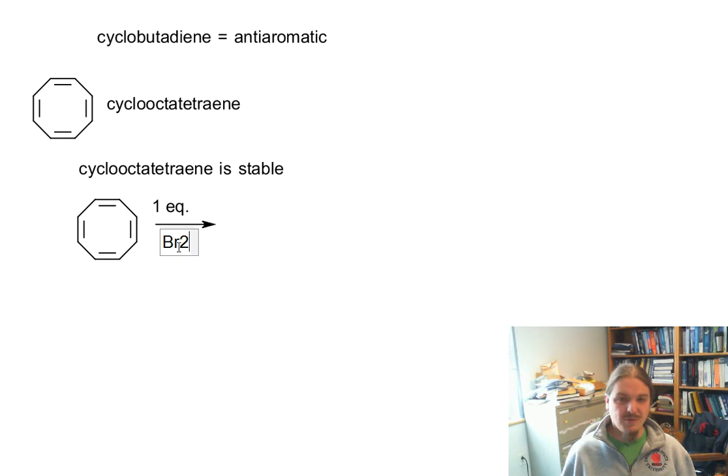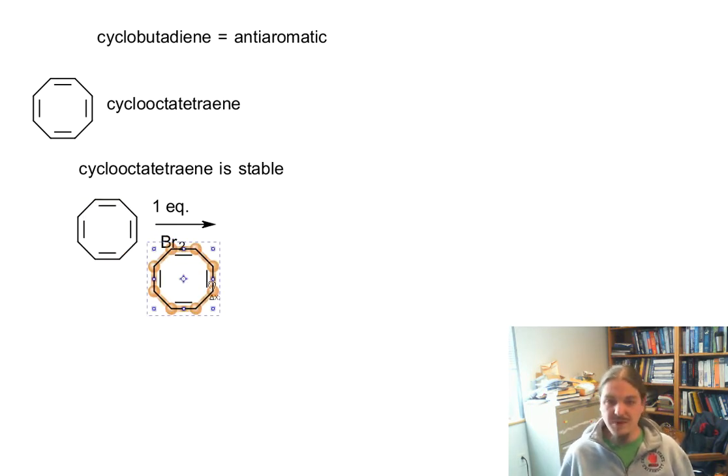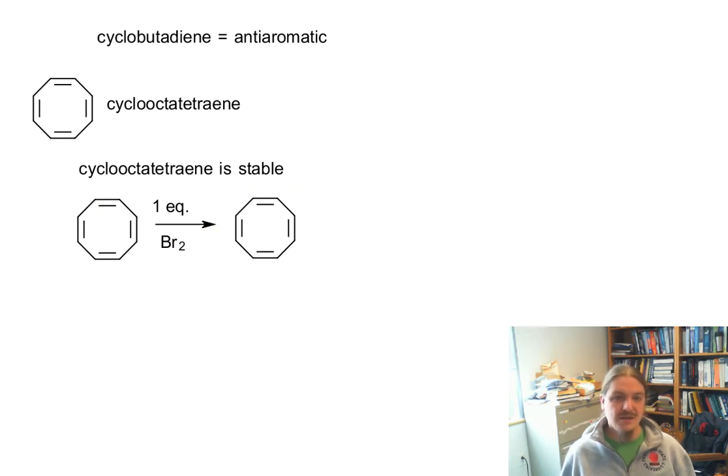So for example, if we were to react cyclooctetraene with one equivalent of bromine under the right conditions, if this molecule were aromatic, it would undergo a substitution reaction. But cyclobutadiene undergoes an addition reaction.